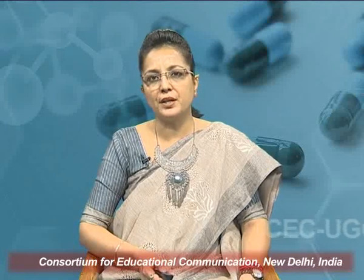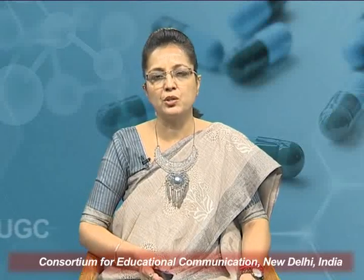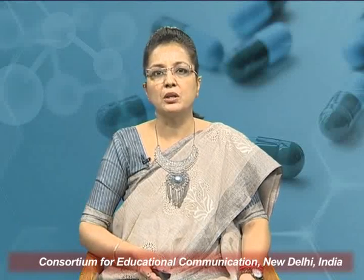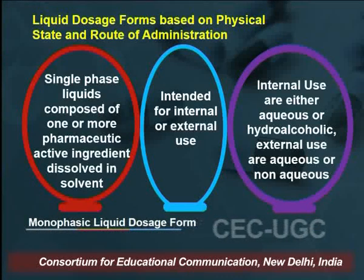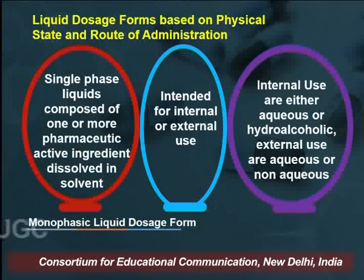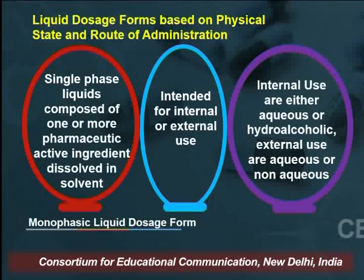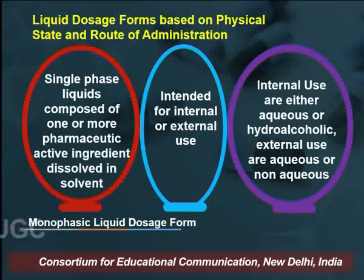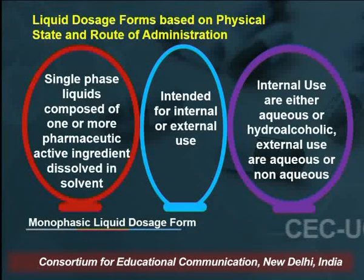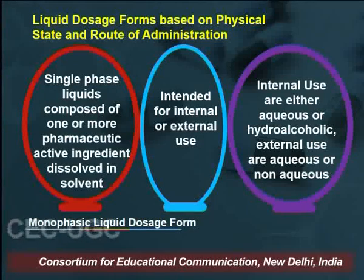Now discussing each type in detail — the first elaborate discussion is on liquid dosage forms based on physical state and route of administration, beginning with monophasic liquid dosage forms. These are single-phase liquid systems composed of one or more pharmaceutical ingredients dissolved in a suitable solvent, intended either for internal or external use. Preparations for internal use are either aqueous or hydroalcoholic based, whereas those for external use are generally aqueous or non-aqueous based.